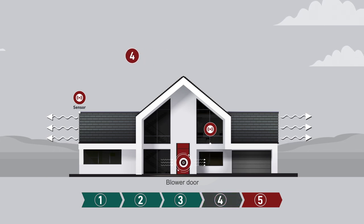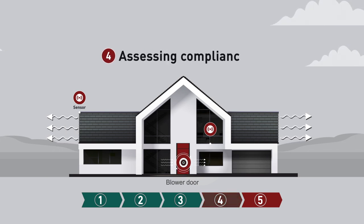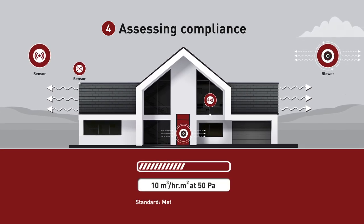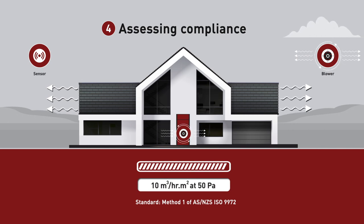Step 4: Assess compliance. Compliance is checked using air permeability at a 50 pascal pressure difference. Air permeability is measured in cubic metres per hour per metre squared. To achieve compliance, the measured air permeability must be no more than 10. When applied to homes, this is broadly equivalent to 10 air changes per hour.